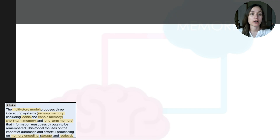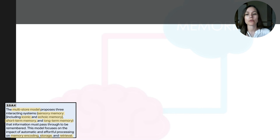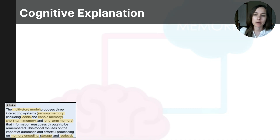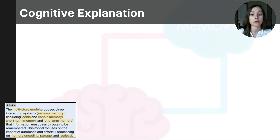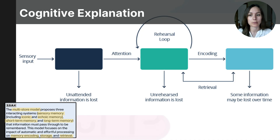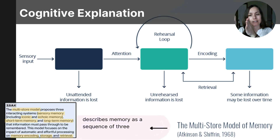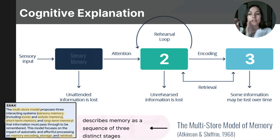Now that you understand memory from the biological dimensions — both the synaptic level and brain structural elements — let's work through memory as a cognitive process. Memory is complex and cognitive psychologists have tried to create models to help people better conceptualize how memory works. The first model is called the multi-store model, proposed in 1968. It describes memory as a sequence of three different stages: sensory memory, short-term memory, and long-term memory.